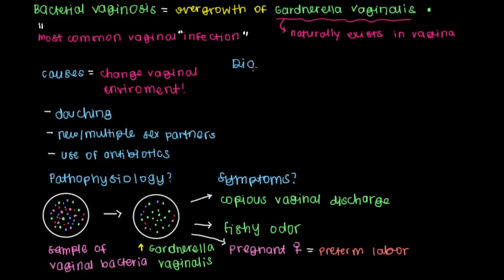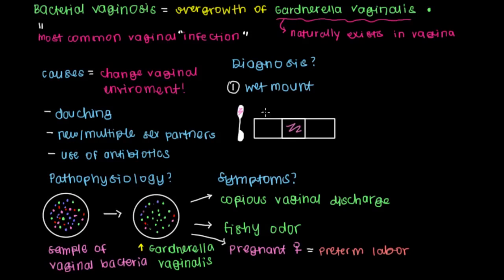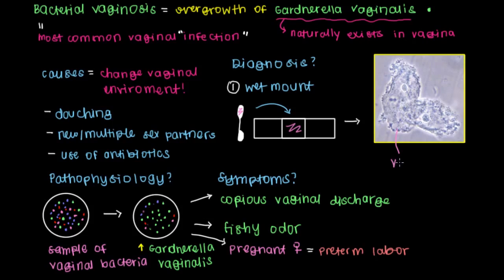It's important to talk about how we can diagnose bacterial vaginosis. This is mainly done by using what's called a wet mount, where you take a swab or a sample from the vagina and add it onto a microscopic slide. When you take a look at this under a microscope, you'll see simple squamous cells — vaginal epithelial cells — that are littered all over with bacterial organisms. There are just so many of them outlining the cells. These are referred to as clue cells. If you find these under a wet mount, that indicates that your patient has bacterial vaginosis.